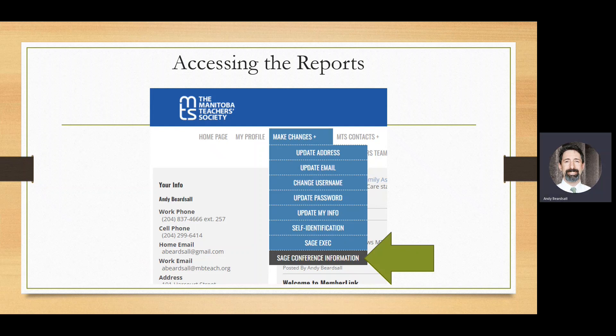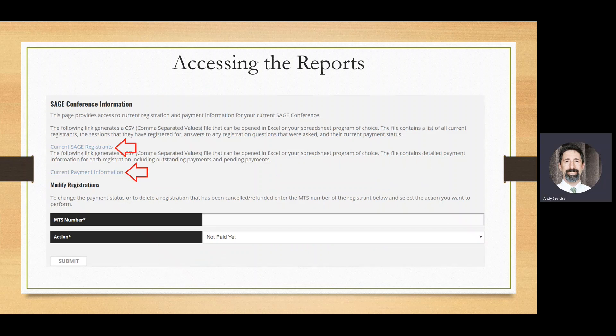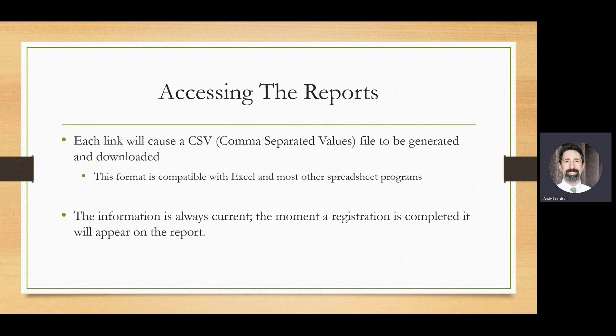Once you click on that, you'll be directed to the conference information page. You can see that the links here are highlighted for the two different reports that are available to you. The report is generated in a comma-separated values file, which is compatible with Excel and most other spreadsheet programs. The information in these reports is always current — the moment a registration is completed, that registration will appear within both of the reports.